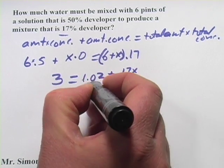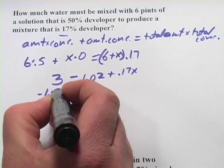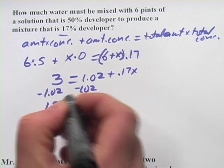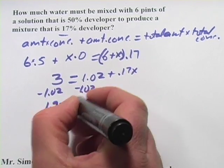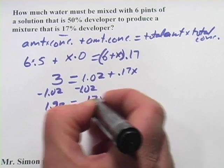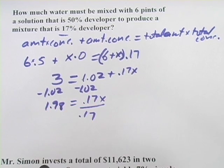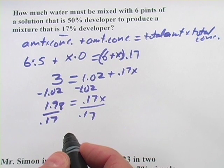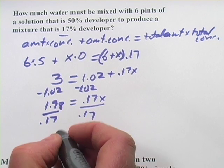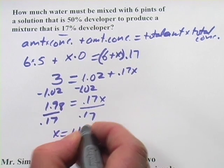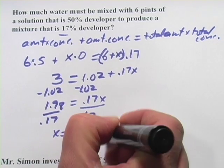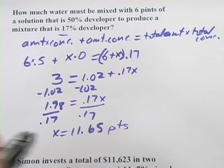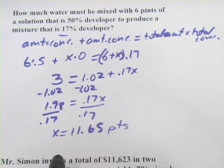We'll subtract 1.02 from both sides. We get 1.98, and then we're going to have to divide by 0.17. And what you come up with there, I think, is 11.65, and that is pints. So that's how much water must be added.